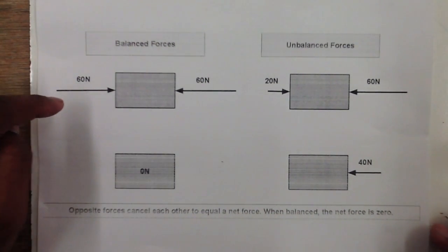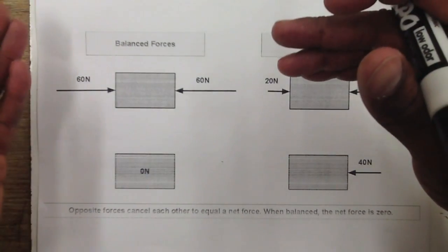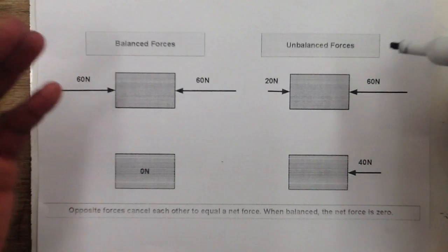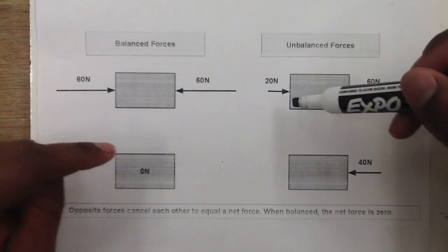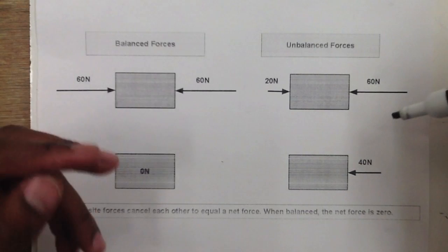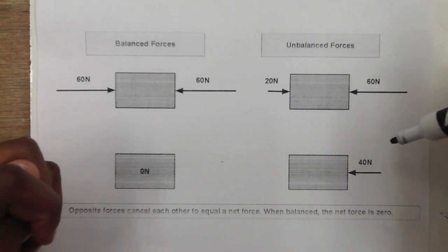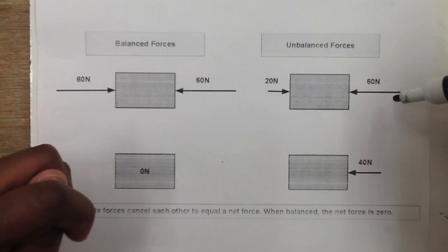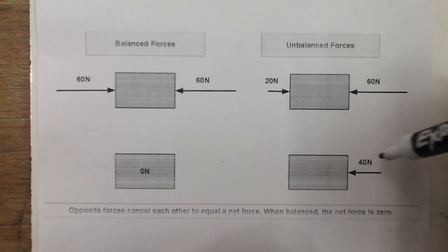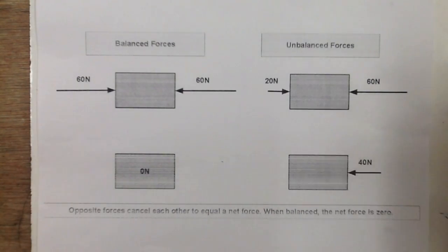Here's a visual showing balanced forces: 60 newtons applied from the left and 60 newtons from the right gives a net force of zero — the forces are balanced and the box doesn't move. In the second example, we have unbalanced forces: 20 newtons from one direction and 60 newtons from the other. The net force is 40 newtons to the left, so the box will move in that direction. If we know the mass of the box, we could calculate the acceleration.